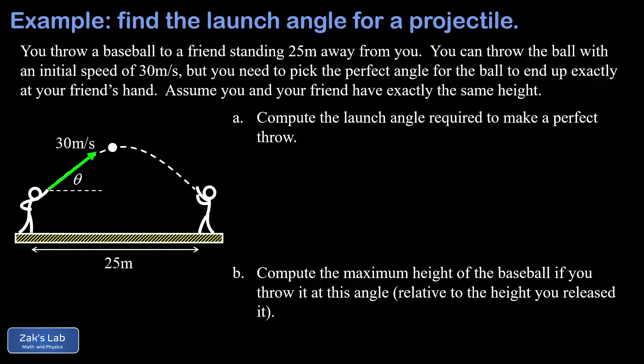The problem is to find the launch angle required for this baseball. Finding the launch angle is always the hardest class of projectile motion problem, because once you do the vertical and horizontal analysis of this flight, you're going to end up with two equations and two unknowns. You have to find a way to use substitution to solve that system for the launch angle theta.